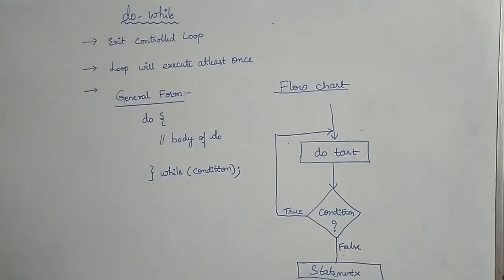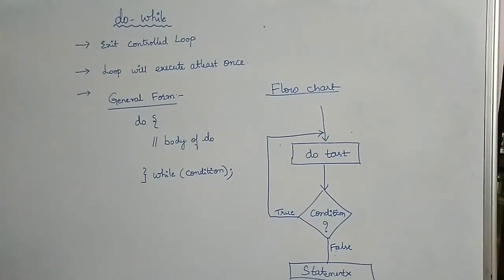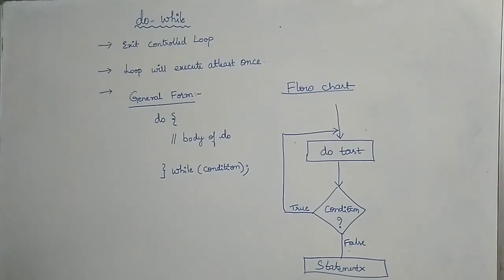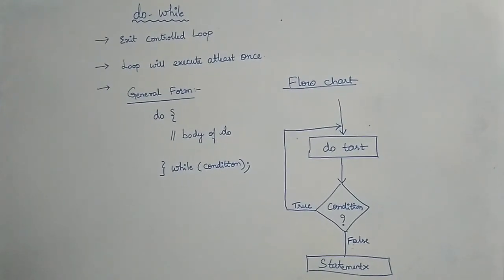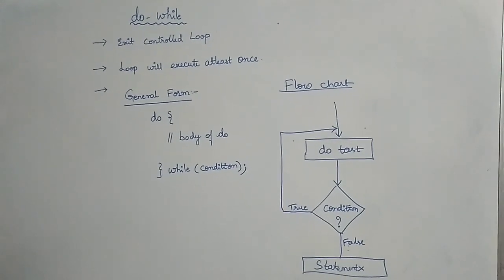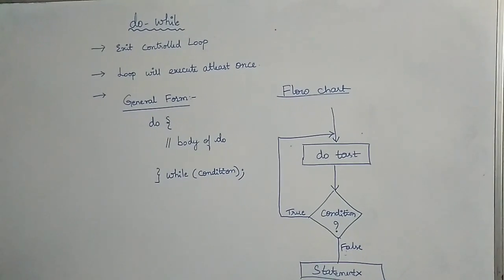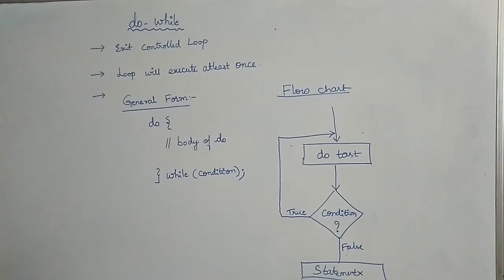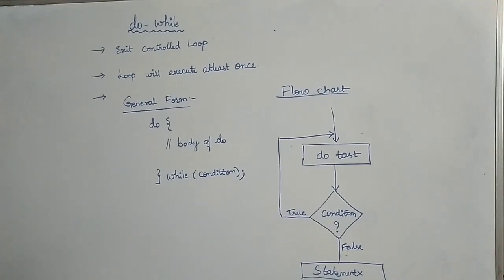Hello friends, welcome back to another session of Core Java tutorials. Today's topic is iterative statements — specifically do-while. In the previous session we covered while, so we'll try to compare while and do-while with an analogy. With while, the condition needs to be satisfied to execute the body of the loop.